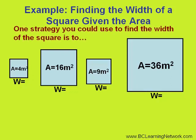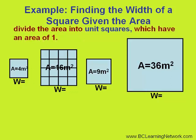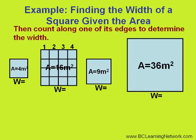One strategy you could use to find the width is to divide the square up into unit squares, which have an area of 1, and then count along one of its edges to determine the width.